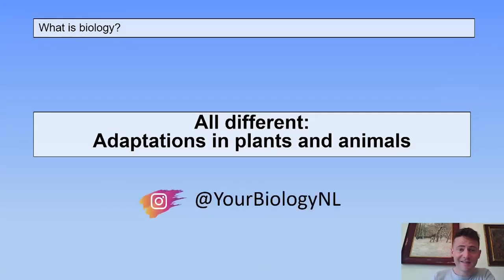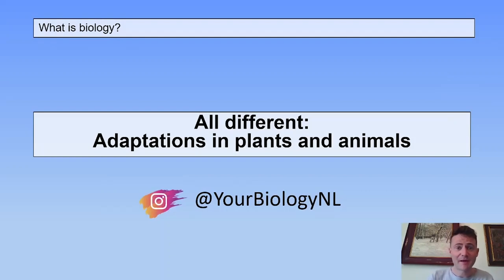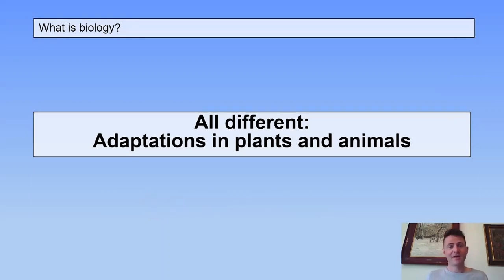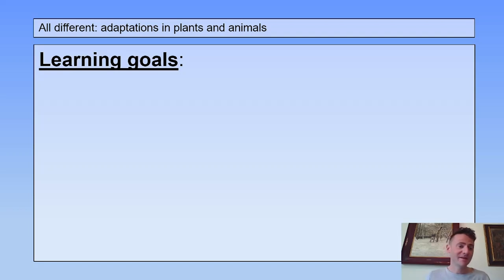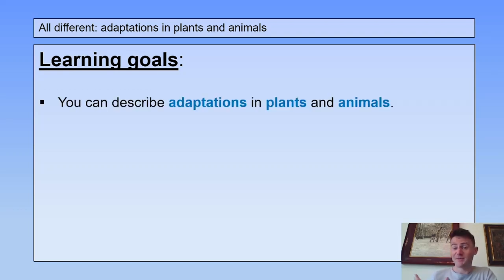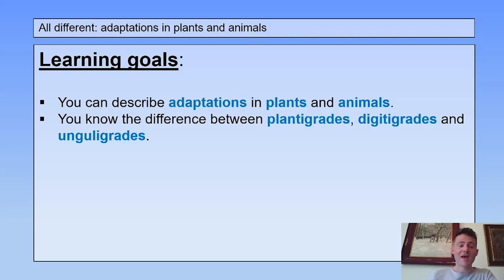Hi, in this lesson I will tell you something about adaptations in plants and animals. The learning goals are: you can describe adaptations in plants and animals, and you know the difference between plantigrades, digitigrades, and unguligrades.